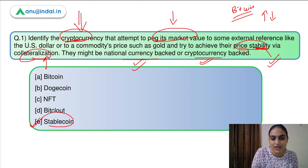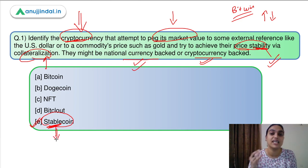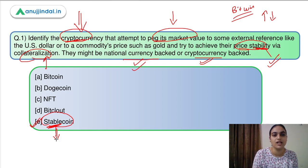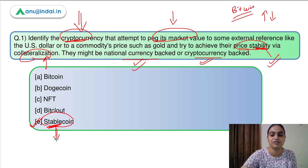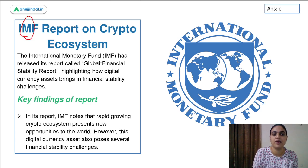From the very name it's clear that stablecoins are more stable — they are less volatile and face fewer fluctuations. We'll be discussing what stablecoins are all about further in our session. The reason I'm discussing this is that the IMF recently came up with its Global Financial Stability Report, which had a separate chapter on the crypto ecosystem.